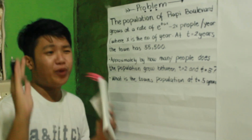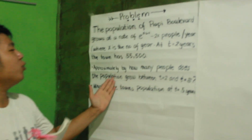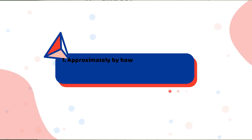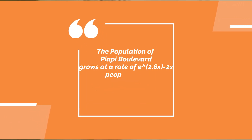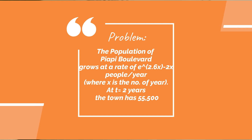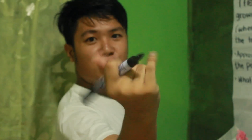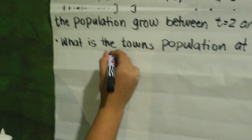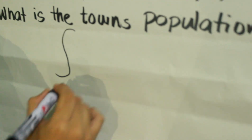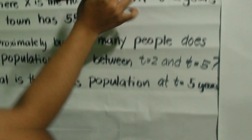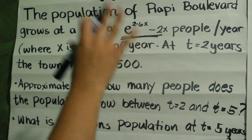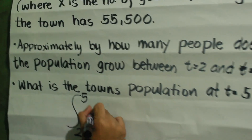So question number 1 is: approximately by how many people does the population grow between t equals 2 and t equals 5? Since we are going to get the population between year 2 and year 5, we are going to use the definite integral. So the equation would be the definite integral from year 2 to year 5, and since in the problem we have the rate, this would be our equation.